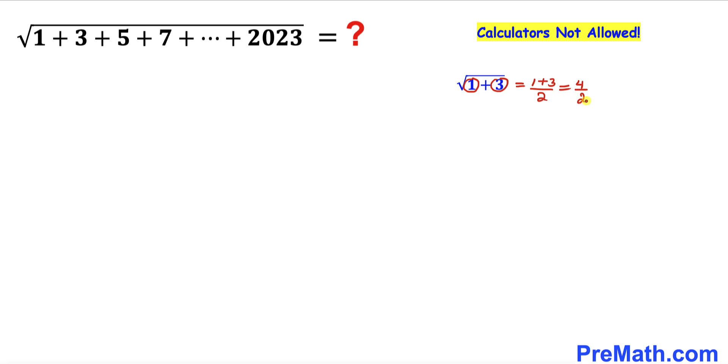Here's another example: the square root of 1 + 3 + 5. Let's focus on the first number and the very last number and add those numbers: 1 + 5 divided by 2. That's going to give us 3 as an answer.